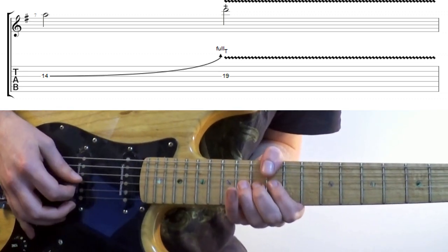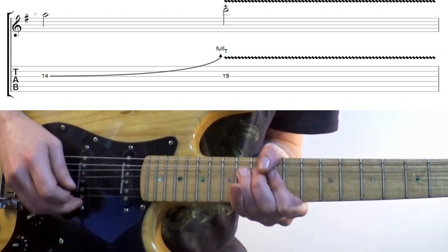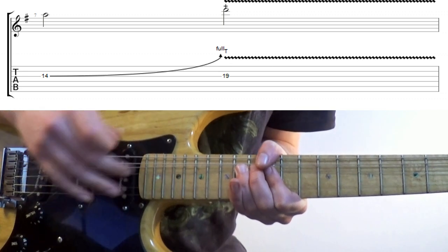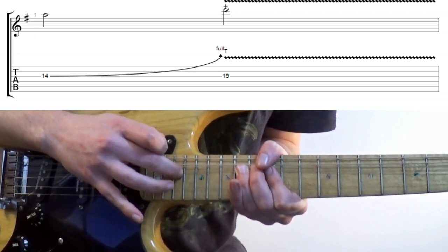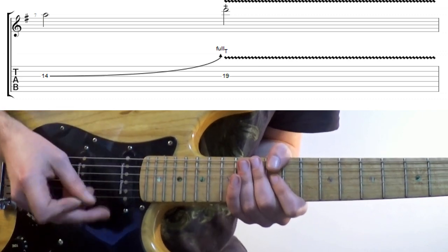In terms of the intervals I'm bending up to B, E's fifth, then tapping what would usually be a D, but due to the bend is in fact an E or a root. So we get a great way to outline an E minor.